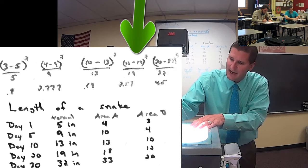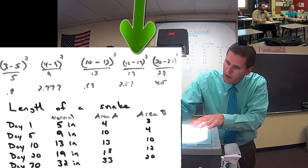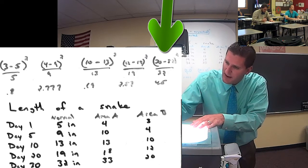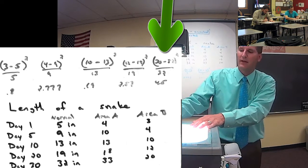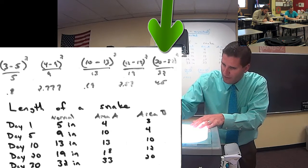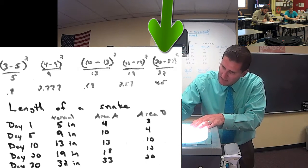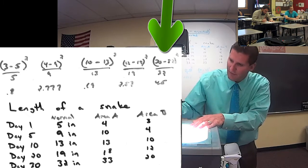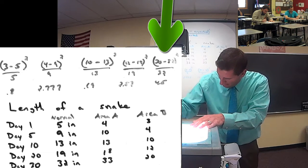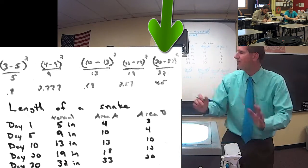Day 20: his snake was 12 when I was expecting 19, that's negative 7, negative 7 squared is 49, divided by 19, gives us a chi-squared value of 2.57. And finally, on day 30, his snake was 20 when I was expecting 32 — that's negative 12, negative 12 squared is 144, divided by the expected value of 32, gives us a chi-squared value of 4.5.